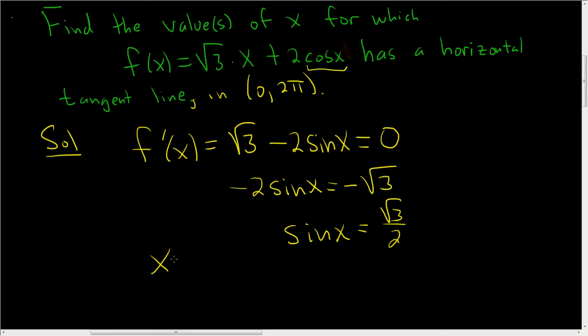And that means that x is π over 3 and 2π over 3. Those are the only two values in this interval for which that's true. If you're confused with that, just think of it this way.